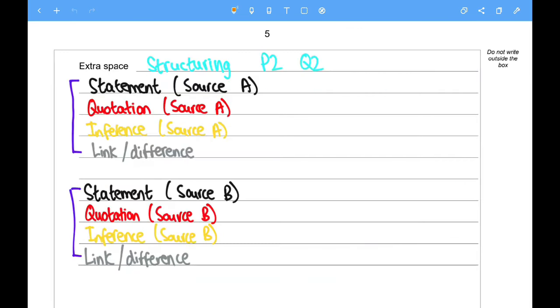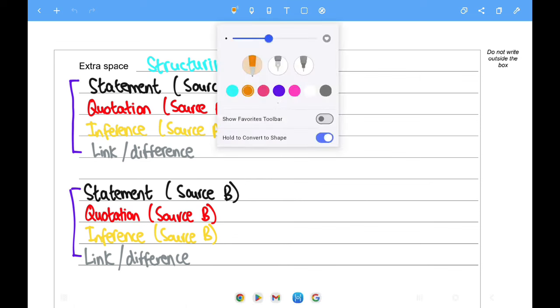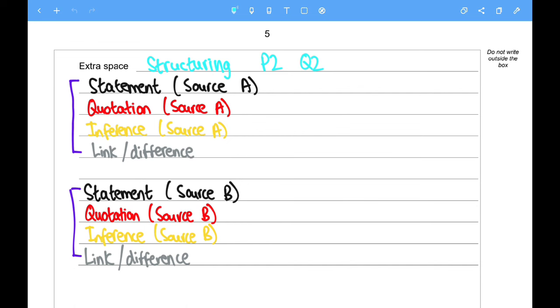And finally, this is a template for structuring Question 2 for Language Paper 2. You start off with the statement for Source A, and then you move on to the quotation for Source A. Then you provide inference for Source A, and then make a link and show how it's different. So that would be one paragraph.